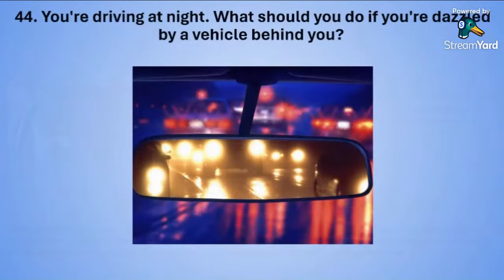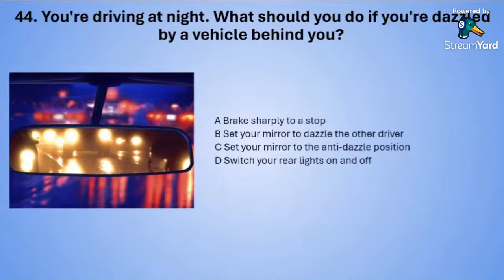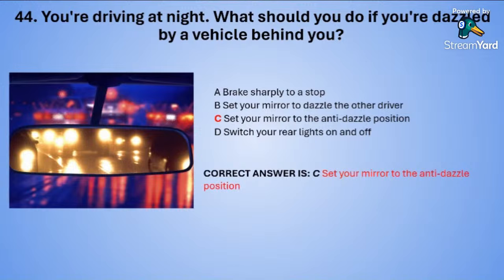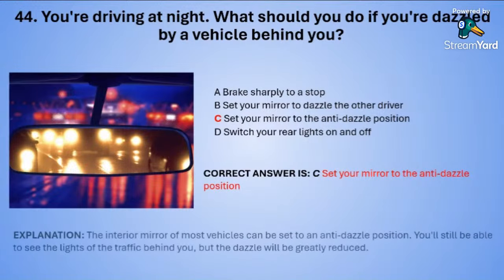Question forty-four: You are driving at night. What should you do if you are dazzled by a vehicle behind you? A: brake sharply to a stop. B: set your mirror to dazzle the other driver. C: set your mirror to the anti-dazzle position. Or D: switch your rear lights on and off. The correct answer is C — set your mirror to the anti-dazzle position. The interior mirror of most vehicles can be set to an anti-dazzle position. You will still be able to see the light of the traffic behind you but the dazzle will be greatly reduced.